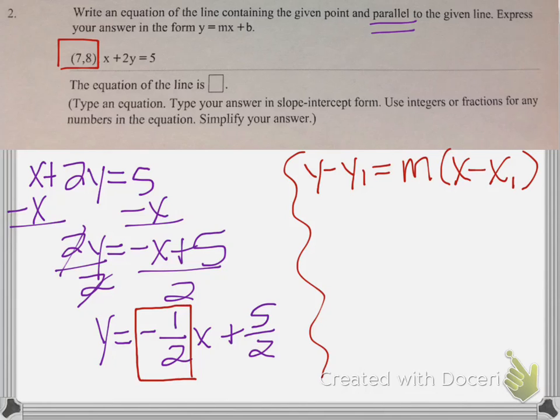And my y, because it's y minus the y coordinate, my y coordinate of my point is 8. Because I want parallel, I use the same slope, negative half. Had it said perpendicular, what slope would I have used? Flip it, and opposite. Positive 2. Yeah, so if it said perpendicular, the process is the same, we just would have used a slope of 2 instead. But it said parallel, so we're going to use the same slope. And then x minus my x coordinate, which is 7.